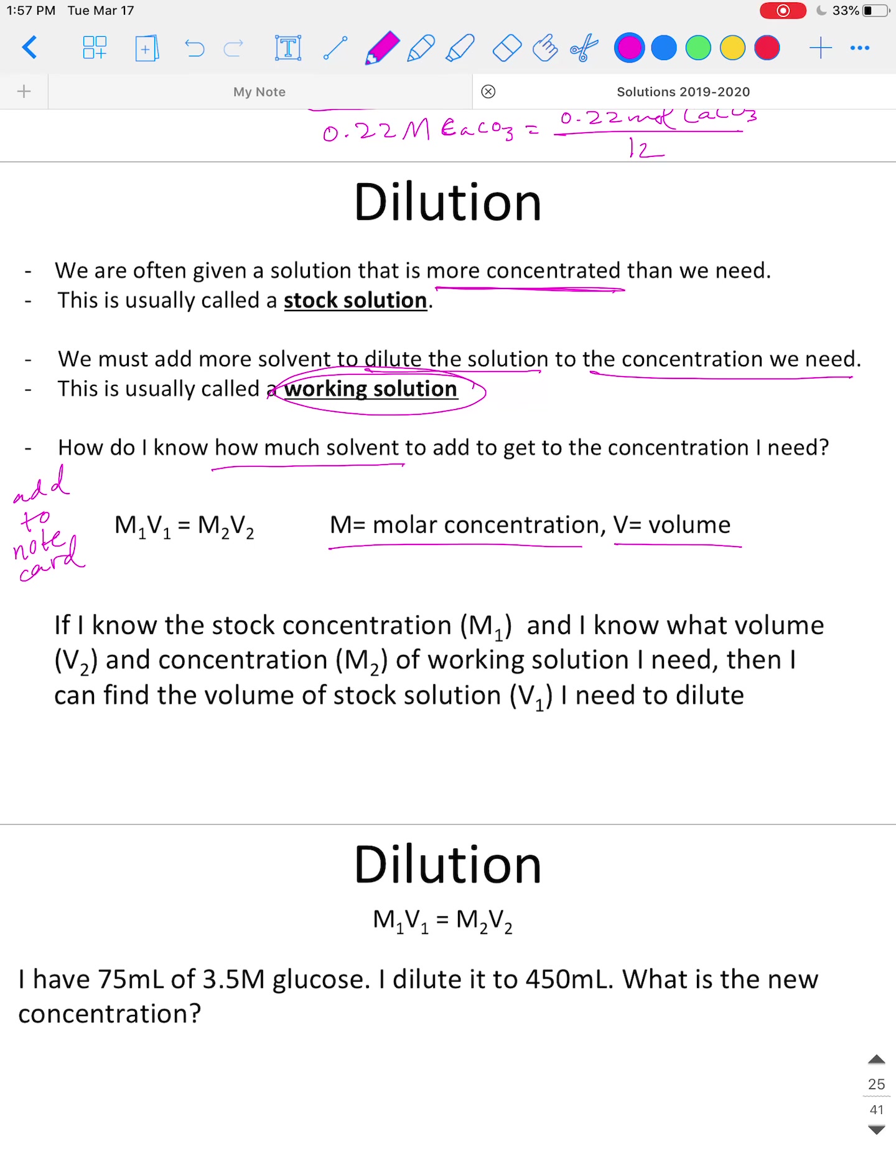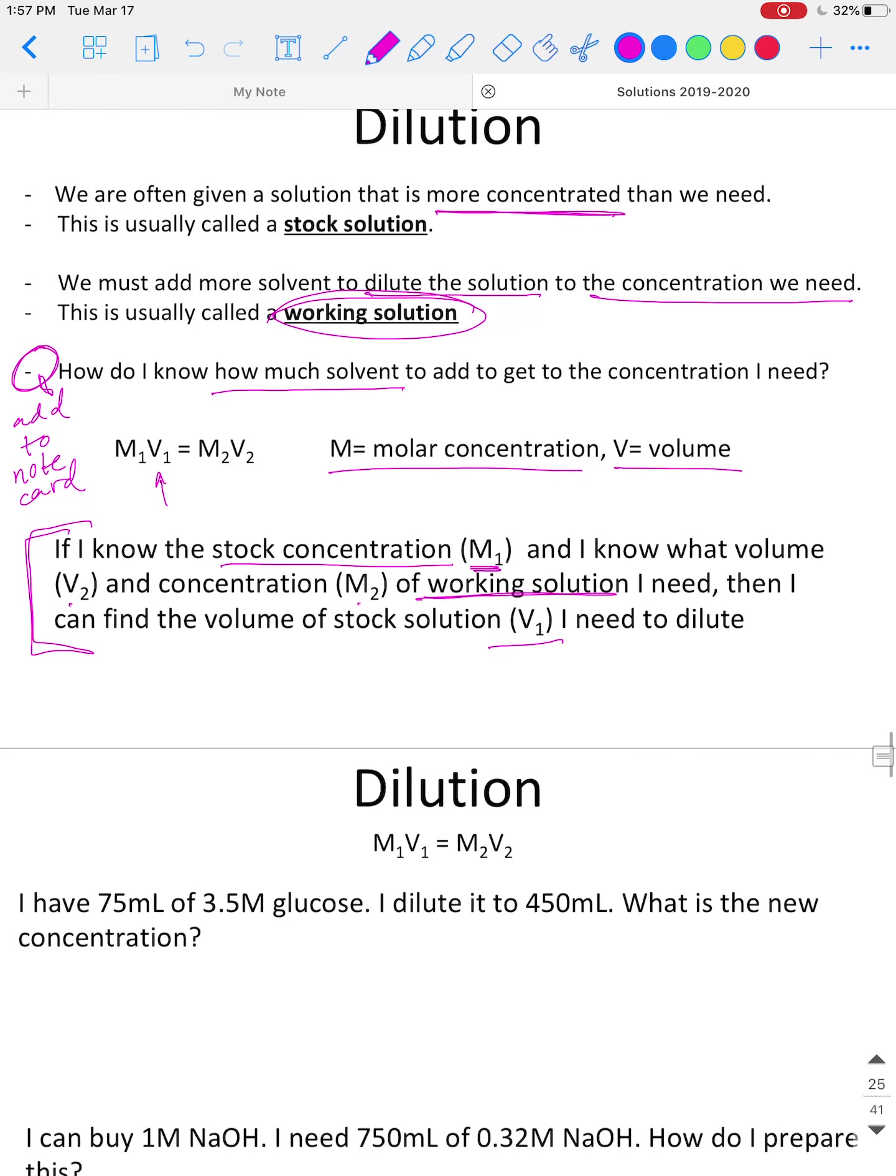You're told what M and V stand for. M is a molar concentration, V is volume. So if we're trying to answer this question right here—how much solvent do we add to our stock solution to dilute it to our working solution—what we're looking for is V1. If I know the stock concentration, which is M1, and then I know what volume and concentration I need for my working solution, which is V2 and M2, then I can find the volume of the stock solution that I need to dilute, which is V1.